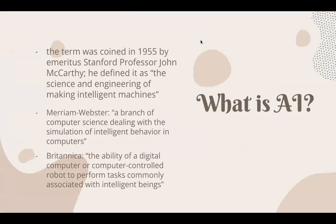So, what is artificial intelligence? The term artificial intelligence was coined in 1955 by Stanford professor John McCarthy, and he defined it as the science and engineering of making intelligent machines. Some other more recent definitions are: a branch of computer science dealing with the simulation of intelligent behavior in computers, and the ability of a computer or computer-controlled robot to perform tasks commonly associated with intelligent beings. AI is basically a process of collecting information or data, sorting it and learning from what is sorted, enabling computers to perform tasks usually needing human intelligence — we are simulating human intelligence in a computer.